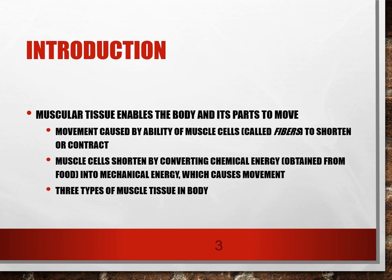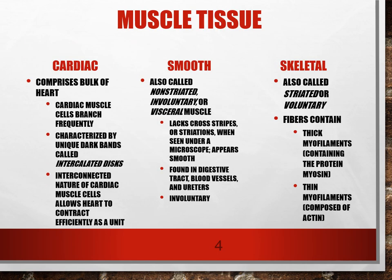Muscular tissue enables us to move, and when fibers shorten, that causes a contraction that allows for movement and other processes to occur in our body. There are three types of muscle tissue. There's smooth, skeletal, and then a combination of the two — really a hybrid muscle called cardiac muscle. So let's start with smooth muscle.